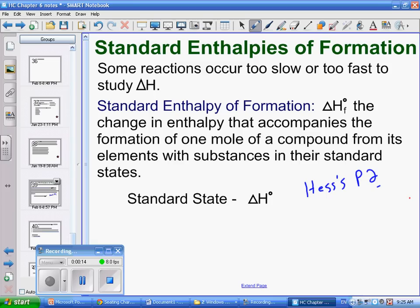As far as Hess's Law Part 2 goes, our standard enthalpies of formation, what happens is I have some reactions that occur too slow or too fast to really study their delta H. So instead of trying to study them in a laboratory by adding chemicals and seeing what happens or blowing things up and see how much energy comes in or out, what we're going to do is calculate them using the standard enthalpy of formation.